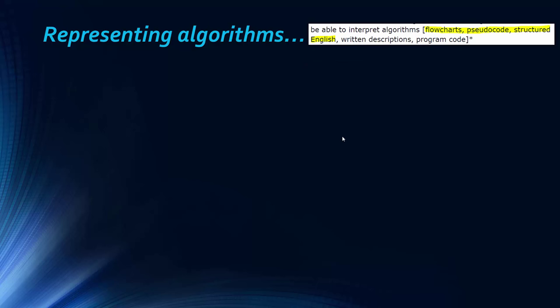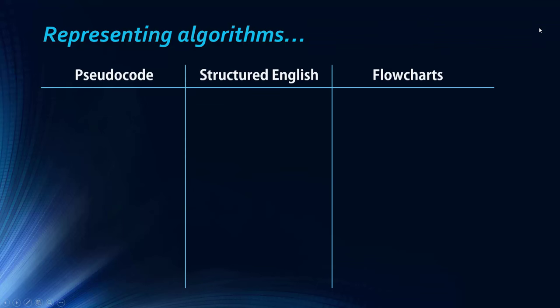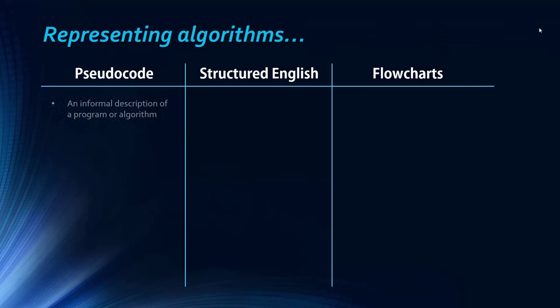If we look at ways you can represent them now, this is just a little excerpt from the specification. So the example lists five ways to represent them. To be honest, these two written descriptions are literally just sentences and program code is kind of practical stuff which we're not going to cover in the exam. But these three we can just briefly look over now.